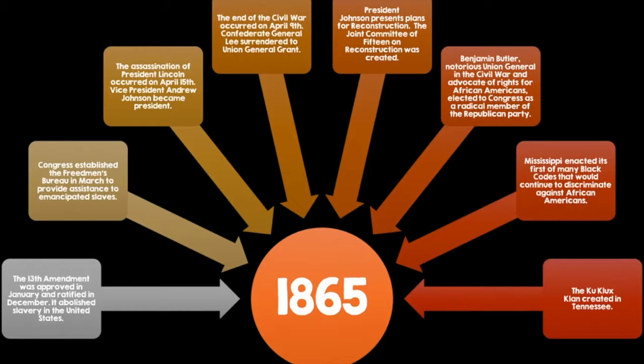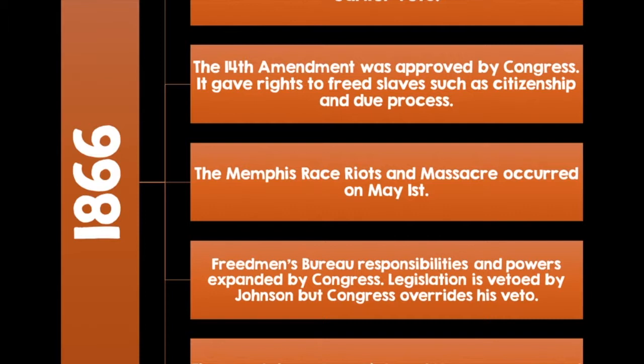In 1866, a Civil Rights Act was passed despite President Johnson's earlier veto. The 14th Amendment was approved by Congress, giving rights to freed slaves such as citizenship and due process. The Memphis Race Riots and Massacre occurred on May 1. The Freedmen's Bureau responsibilities and powers were expanded by Congress, but legislation was vetoed by Johnson — however, Congress overrode his veto. The New Orleans Race Riots and Massacre occurred on July 30.